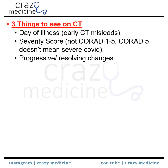Then if CT is done, three things to see on CT. First, day of illness — early CT may mislead because CT may be normal in the initial 3 to 4 days of symptom onset. Then severity score — you must look at the severity score, not the CO-RADS system. CO-RADS 5 does not indicate severity; it just indicates the probability of infection, not the severity. Then progressive or resolving changes — if CT is repeated, remember that repeat CT is not recommended.